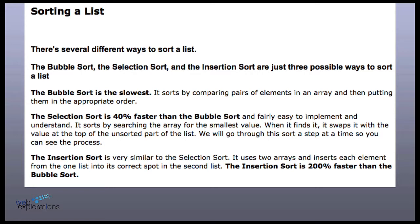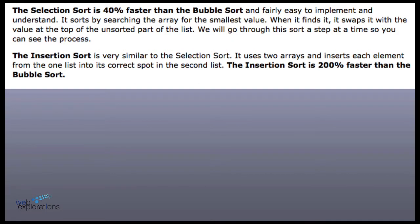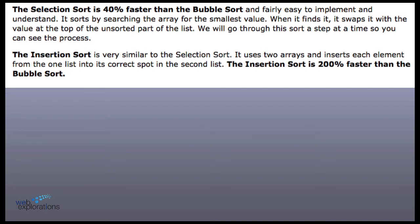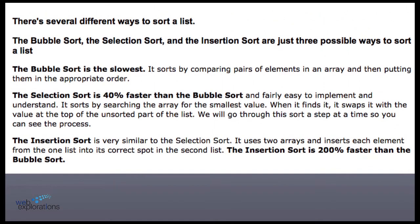Here are three different ways we can sort. We can do the bubble sort — this is what they usually show in computer classes, and it's really slow. Nobody uses it except computer careers teachers. Then there's the selection sort, and it's 40% faster — that's what we're going to use today. Then there's the insertion sort, really similar to selection, and it's 200 times faster than the bubble sort. We're going for the middle ground right now just to meet our deadline tomorrow.